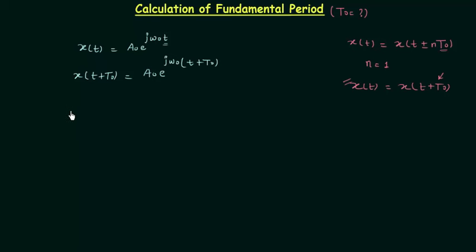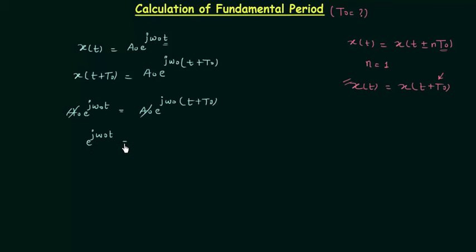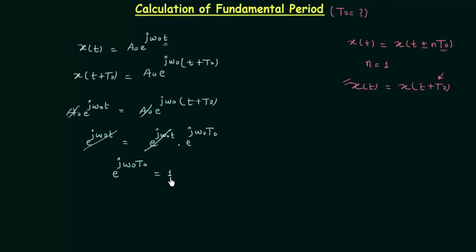Now by using this condition we have a0·e^(jω0·t) equal to a0·e^(jω0·(t + t0)). The a0 terms cancel out, and we have e^(jω0·t) equal to e^(jω0·t) multiplied with e^(jω0·t0). The e^(jω0·t) terms cancel out, and we have e^(jω0·t0) equal to 1.